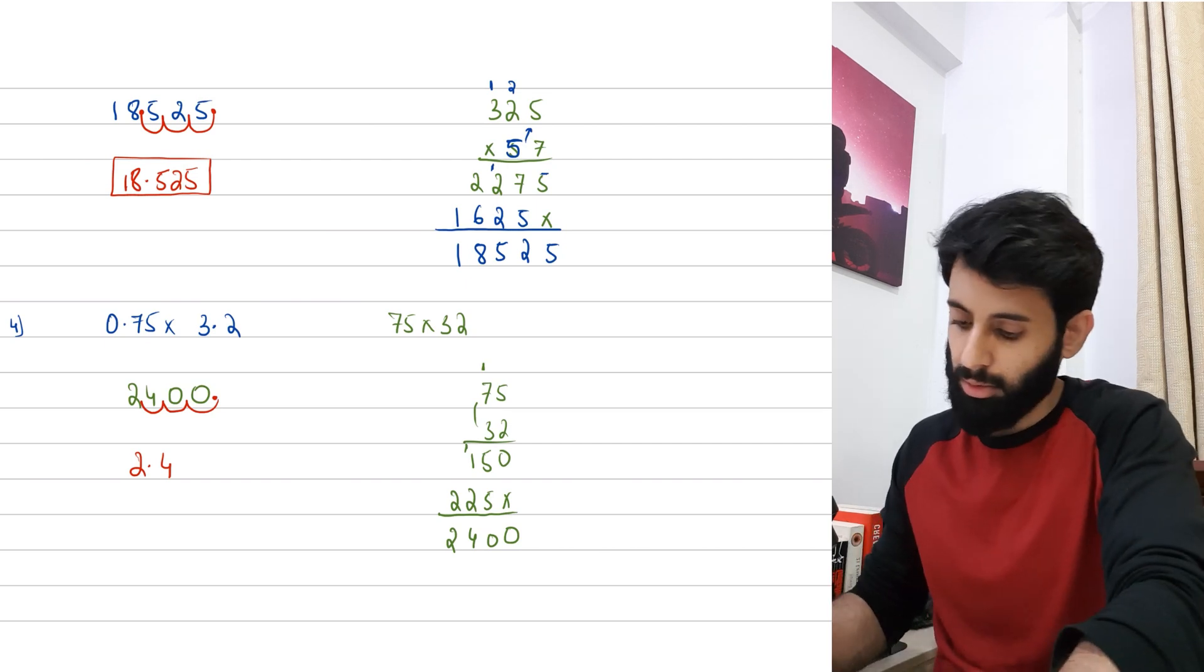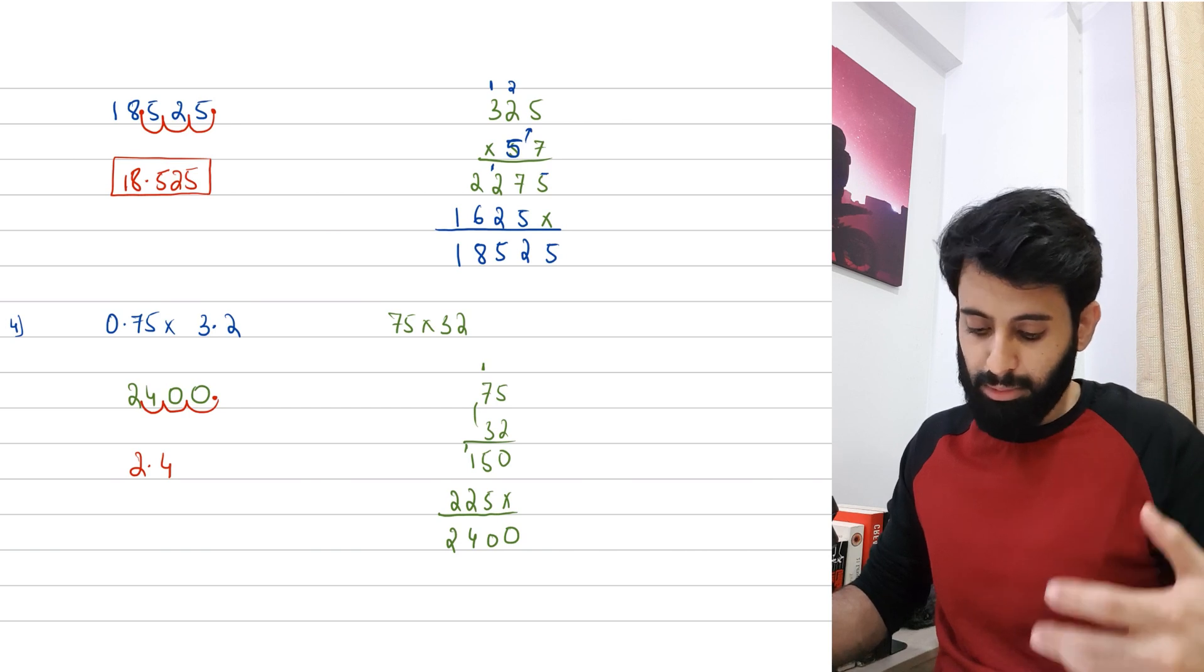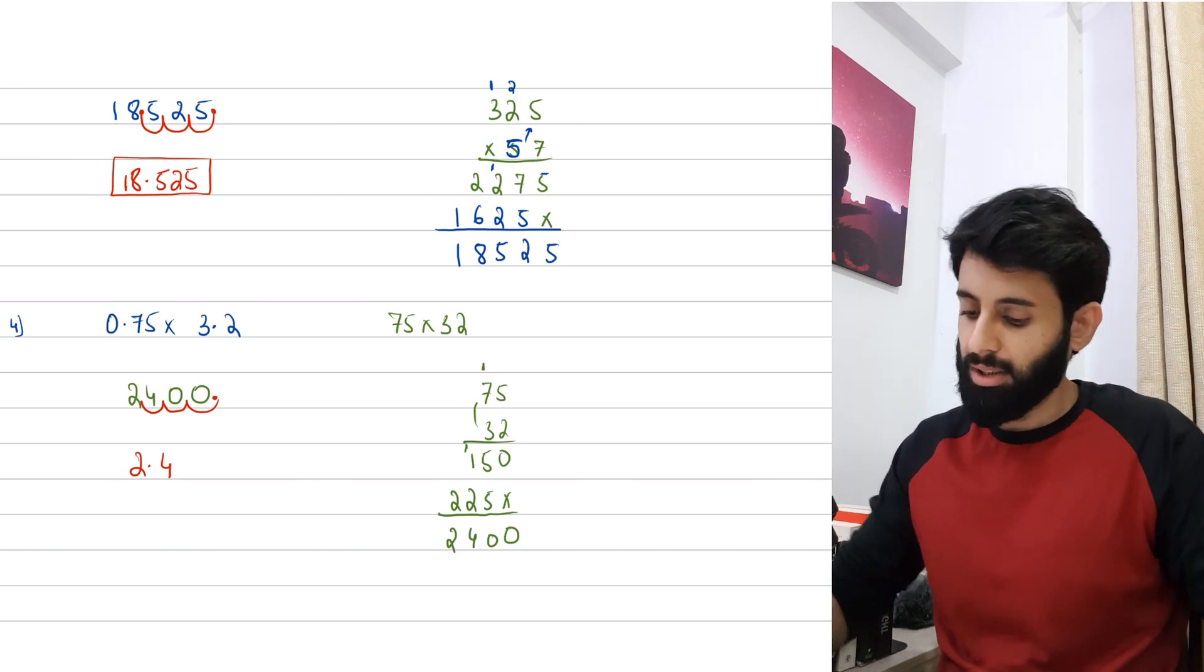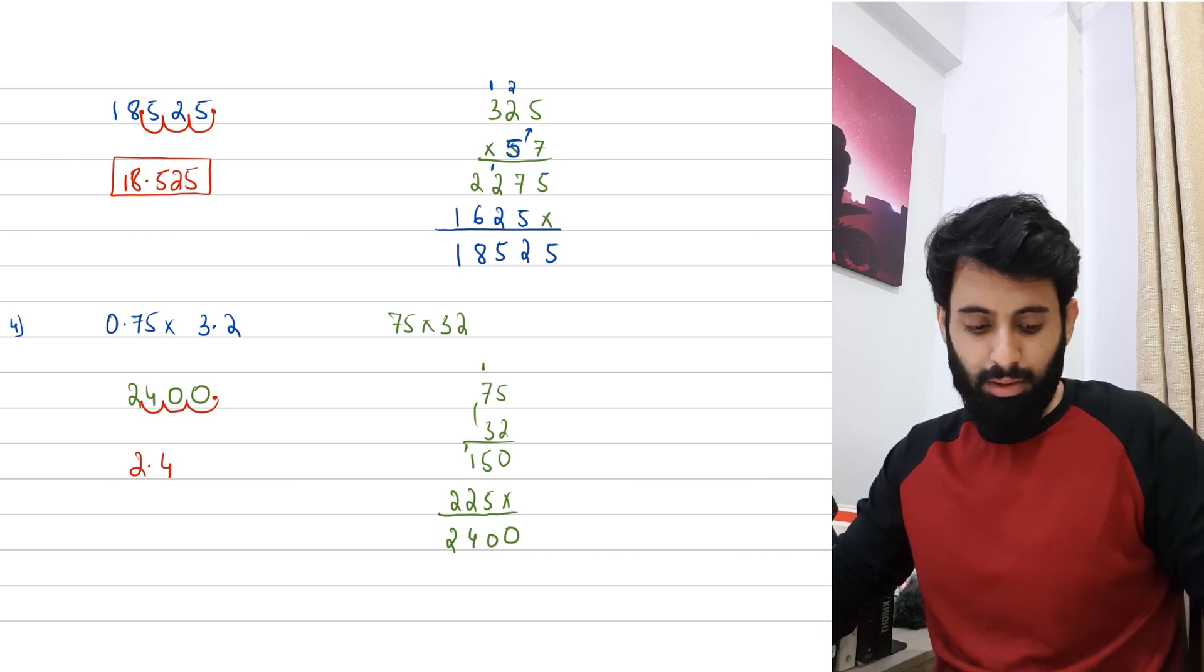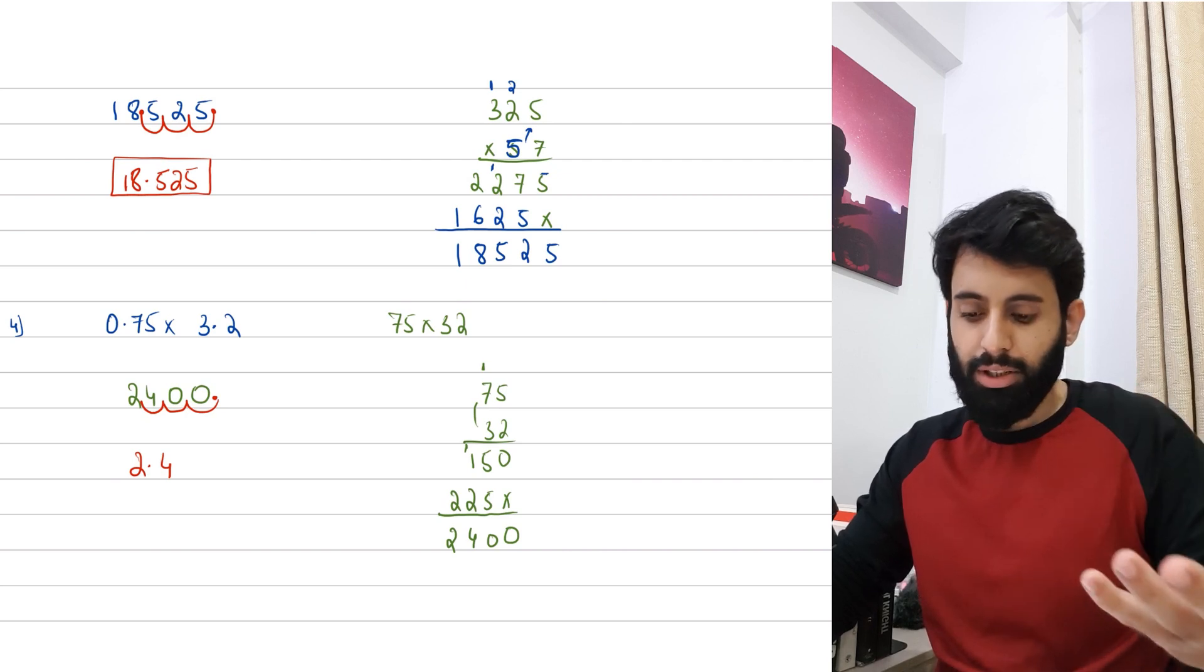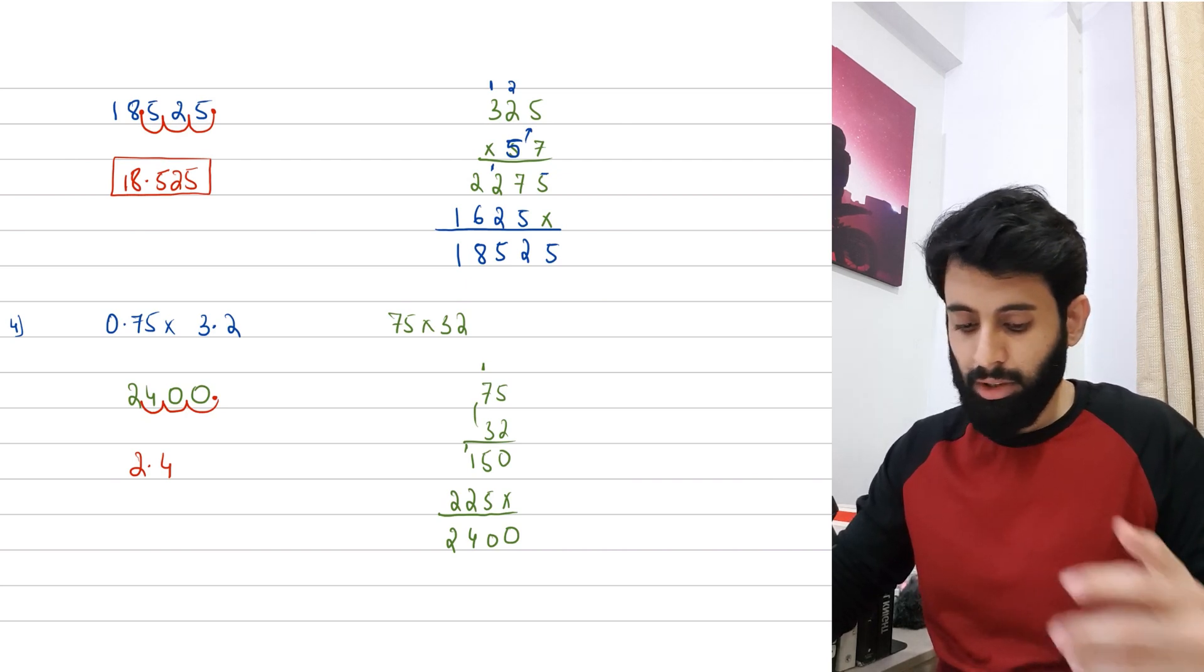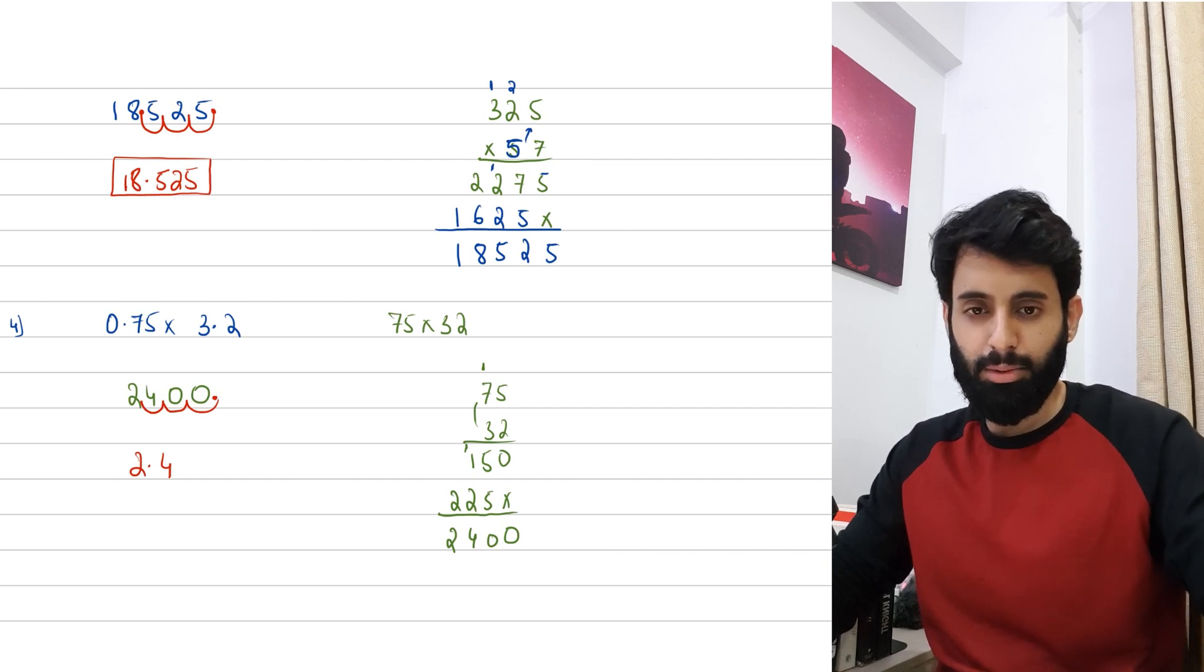So there you go, this is how you can multiply decimals by just forgetting the decimal and then bringing it back into the equation. I hope this makes this concept at least easier for you, and I will encourage you guys to practice questions on your own and hopefully work your way towards a better grade. That's all for this video, see you guys in the next one, until then take care.